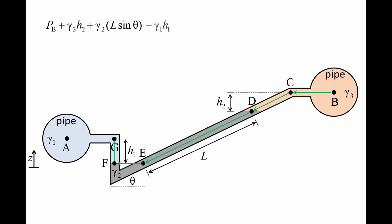Then move to point G while the pressure decreases by gamma 1 h1. Finally, we move horizontally from point G to point A with no change in pressure. We have reached our destination and set the equation on the left equal to the pressure at point A.